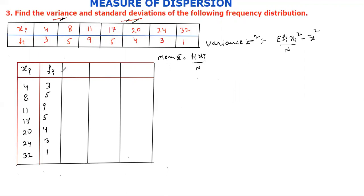Let's draw the mean formula. The mean formula for x̄ is used when computing the variance. The standard deviation is equal to the square root of sigma squared.